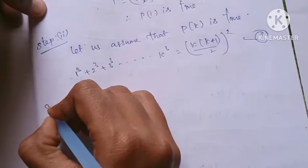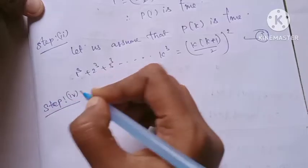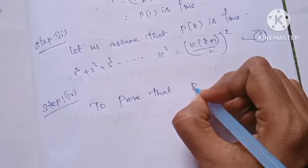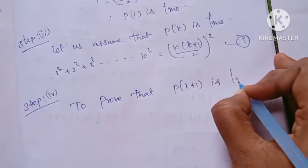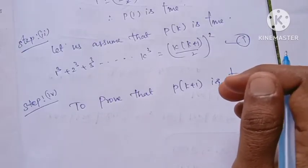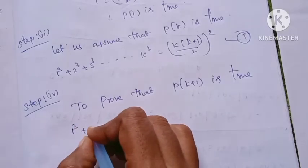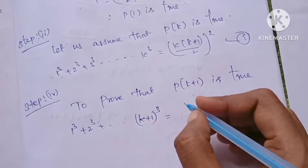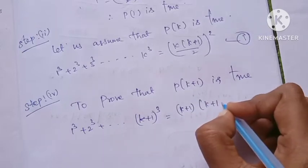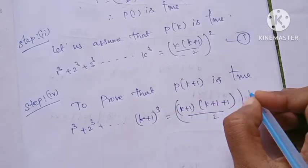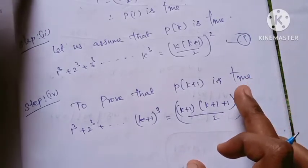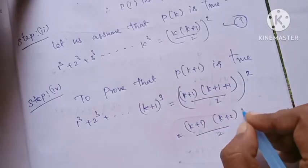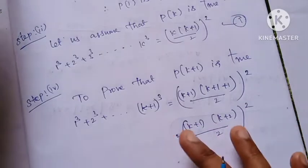Step 3: We need to prove that P of k plus 1 is true. We substitute k plus 1, so 1 cube plus 2 cube, up to k plus 1 the whole cube, is equal to k plus 1 into (k plus 1 plus 1) by 2, the whole square, which simplifies to k plus 1 into (k plus 2) by 2, the whole square.